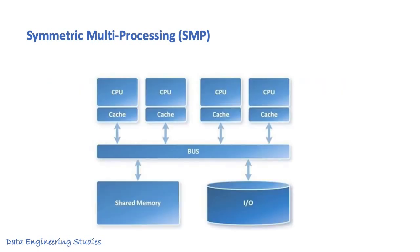If you see this architecture, there are four processors and all the processors share the same shared memory. All the processors are connected via a System Bus. In SMP architecture, all the processors are tightly coupled as all the processors share the same memory and I/O devices.